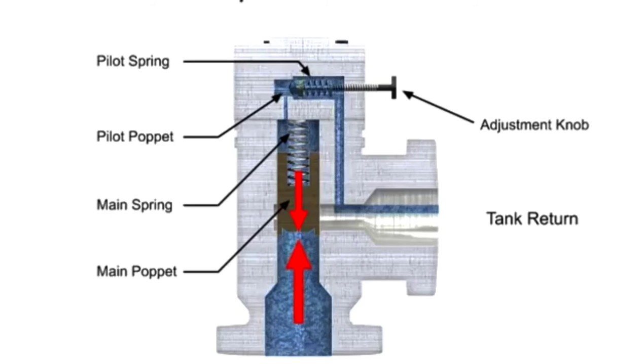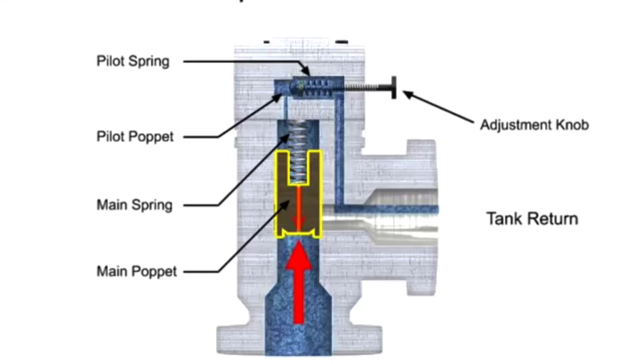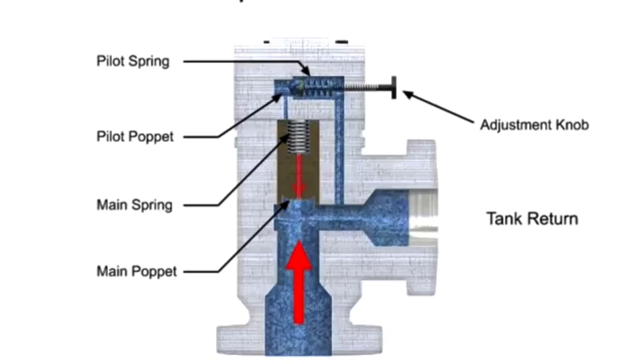Once the pilot valve is open, there is now a pressure drop across the main valve poppet with a higher pressure on the pump line side. This causes the main poppet to move, allowing full flow through the relief valve.